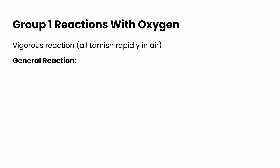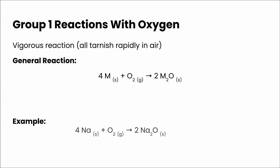The general reaction is we take 4 of the metal — so this could be sodium, lithium, potassium, or any of those alkali metals — reacting with oxygen gas, and that forms the metal oxide or M₂O. A specific example would be: 4 sodium + O₂ reacts to give 2 sodium oxide.